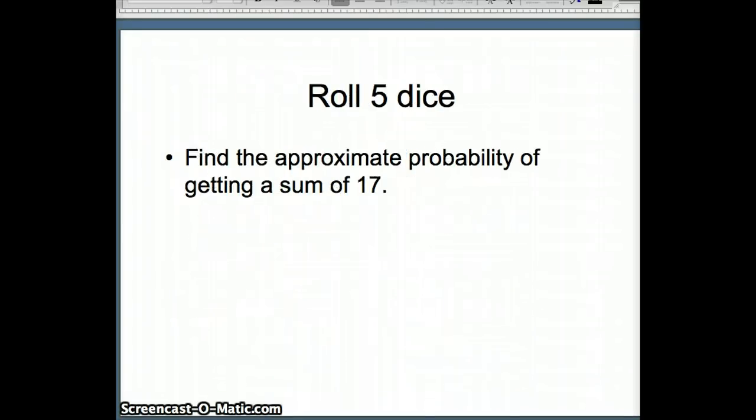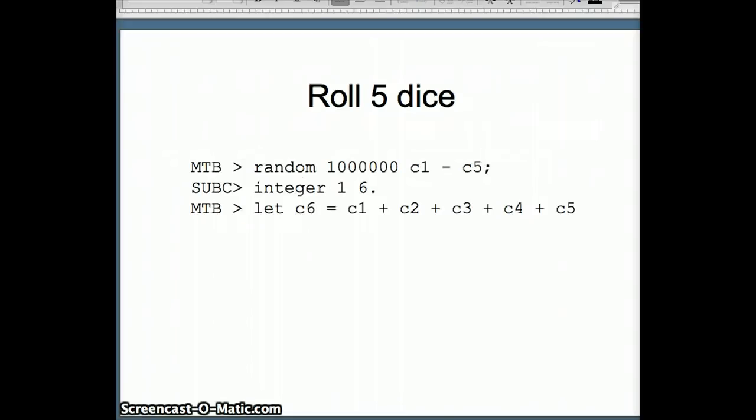Let's take a look at how we would roll five dice. If my goal is to find the approximate probability of getting a sum of 17, I need to design a simulation that will enable me to roll five dice. And here I'm going to use one million. So I'm saying random one million C1 through C5, putting a million numbers in columns one through column five. Make them all integer one through six. And then we're going to go ahead and add up all those numbers. So I've got let C6 equals C1 plus C2 plus C3 plus C4 plus C5.